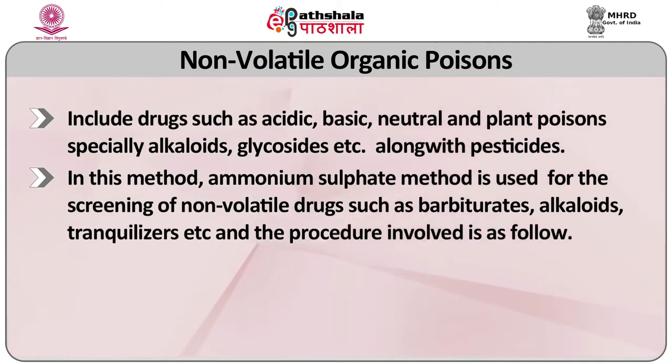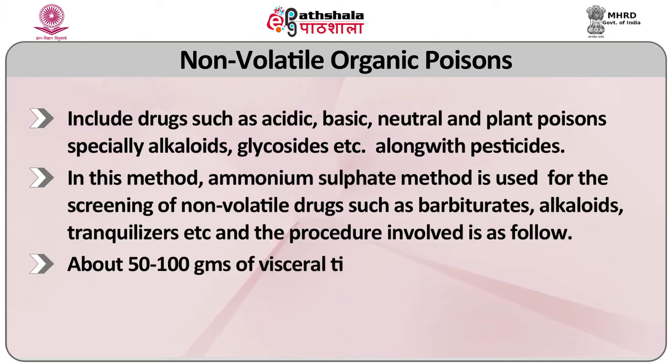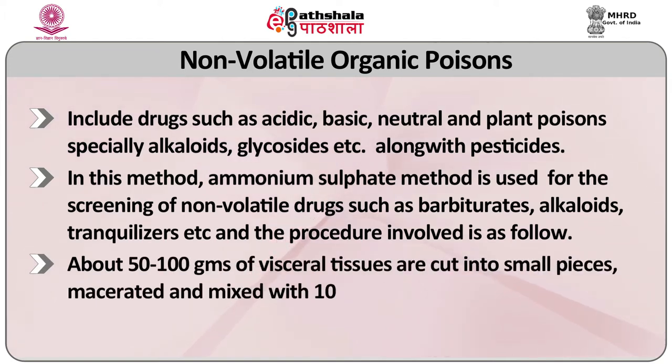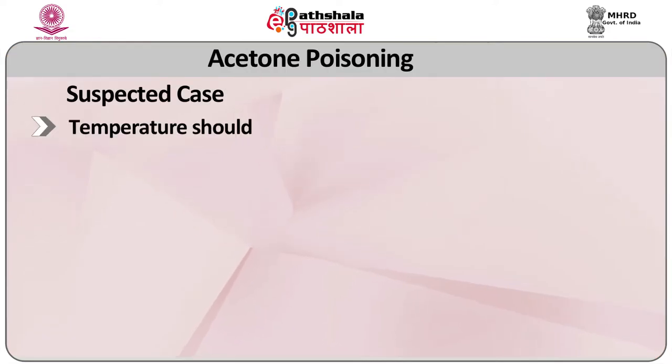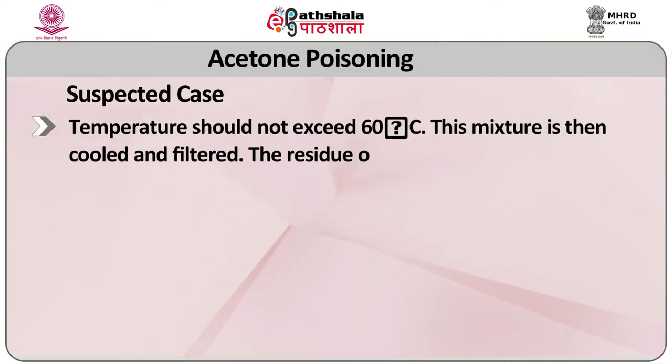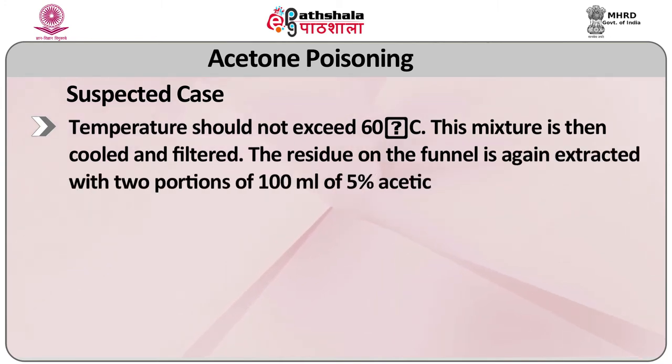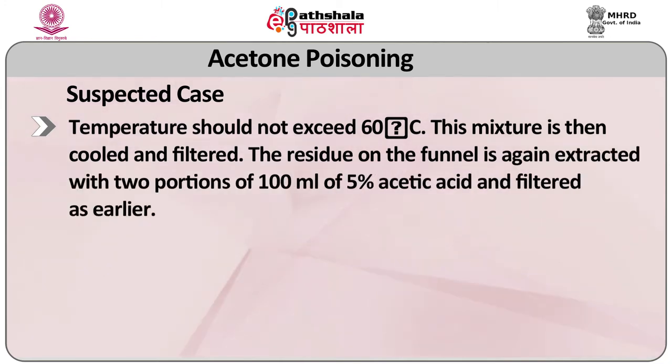About 50 to 100 grams of visceral tissues are cut into small pieces, macerated and mixed with 100 ml of 5% acetic acid in a beaker. To make a saturated solution, solid ammonium sulfate is added with frequent shaking. About 20 grams of solid ammonium chloride is added to it. Then it is heated on a boiling water bath for 3 hours. In suspected cases of acetone poisoning, temperature should not exceed 60 degrees centigrade. The mixture is then cooled and filtered, and the residue on the funnel is extracted with 2 portions of 100 ml of 5% acetic acid and filtered.